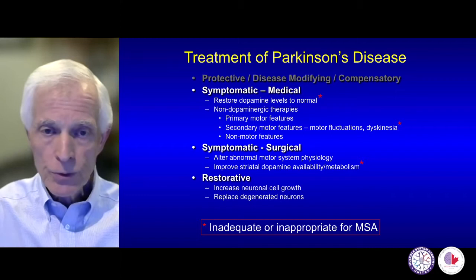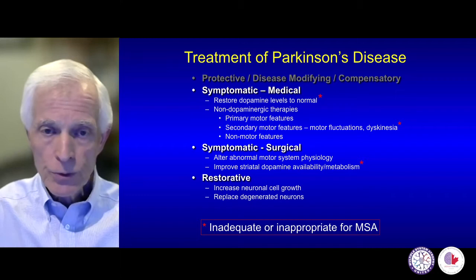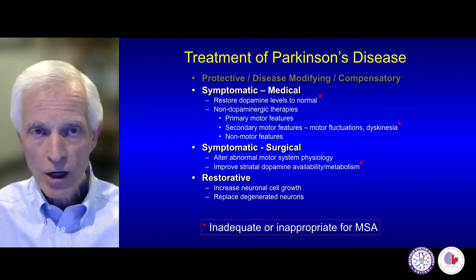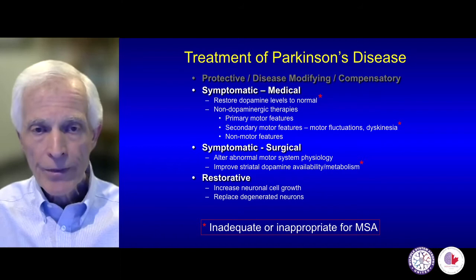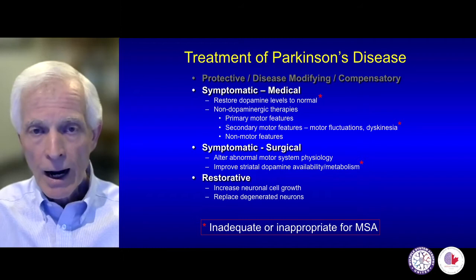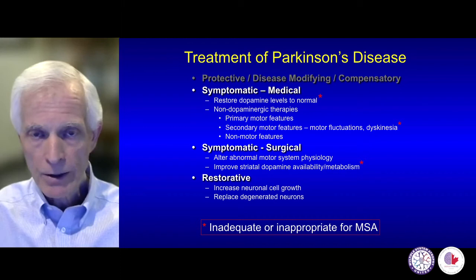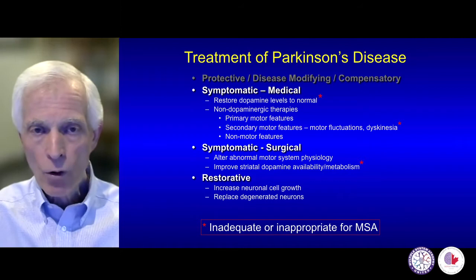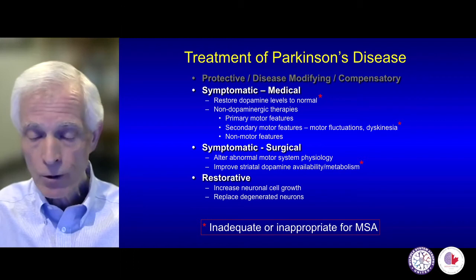Let's move on to other treatments. This is a slide revised from one I often use when talking about treatment of Parkinson's disease — covering protection or disease modification, symptomatic therapies (medical and surgical), and restoring cells. The problem is that most of these therapies address dopamine dysfunction or loss of dopamine in Parkinson's. Unfortunately, the pathology of MSA is more than just dopamine — that's why we call it multiple system atrophy, involving many brain regions. So these treatments effective in Parkinson's may be inadequate or inappropriate in MSA, but that doesn't mean we can't apply them with some benefit.